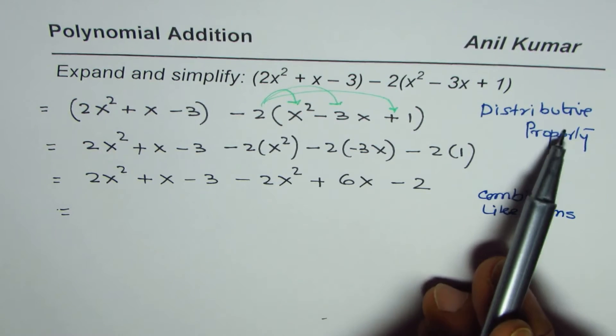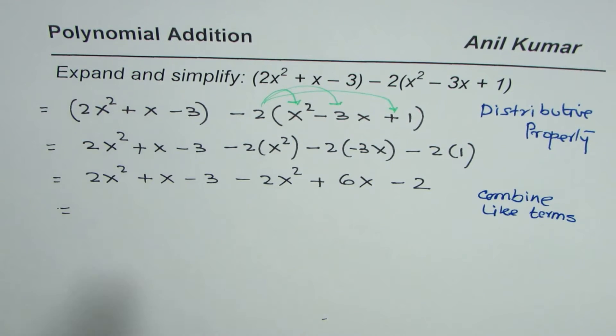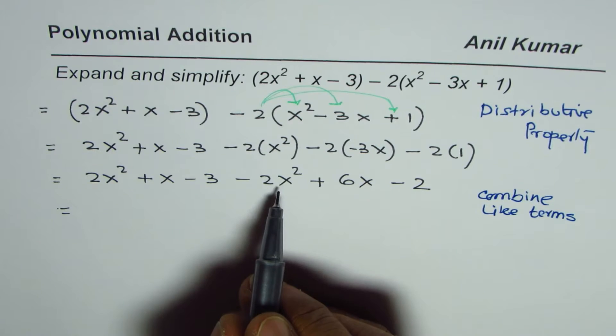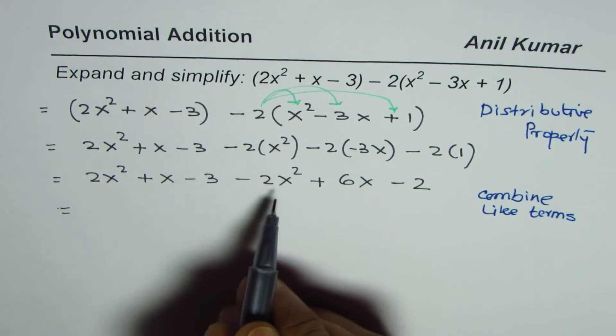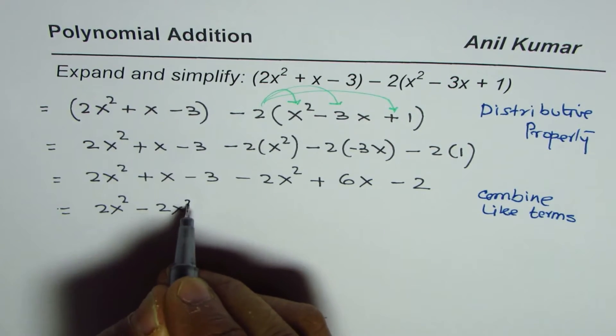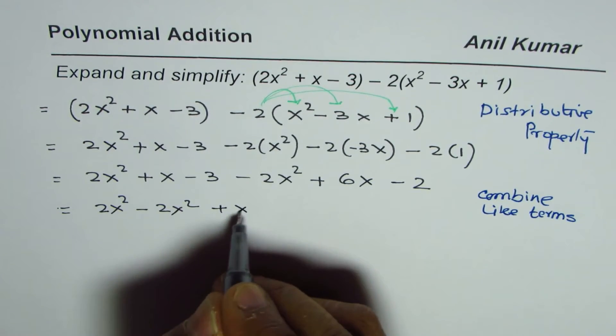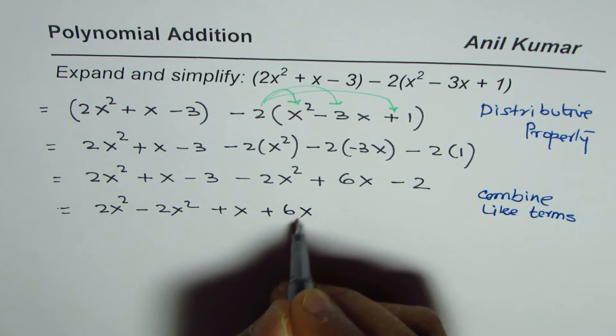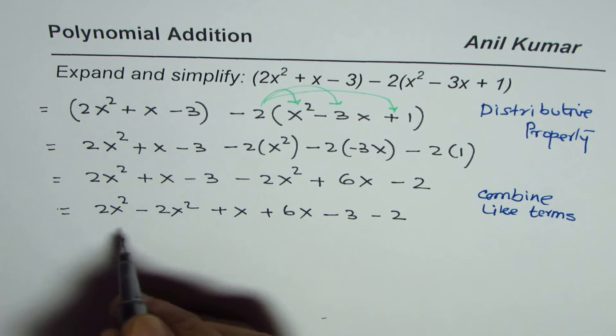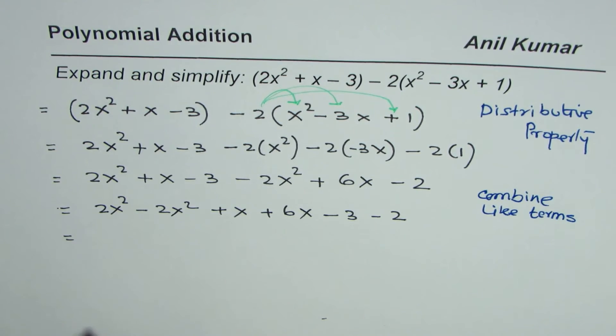Look for like terms. So we have 2x² - 2x². Let me regroup. We have 2x² - 2x². Look for x terms: we have +x + 6x. Now the constants: -3 and -2. So we have rearranged to put like terms together.